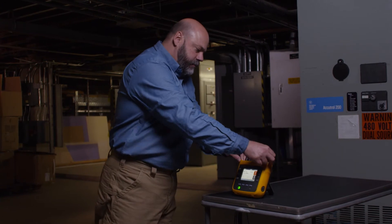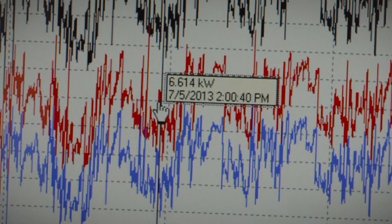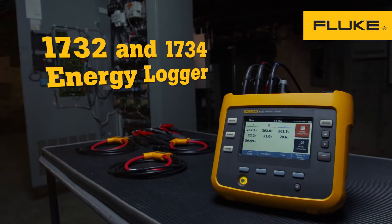Paying for power you're not using is a problem. Start tracking your energy and stop wasting your money. Put the 1732 or 1734 to work for you.